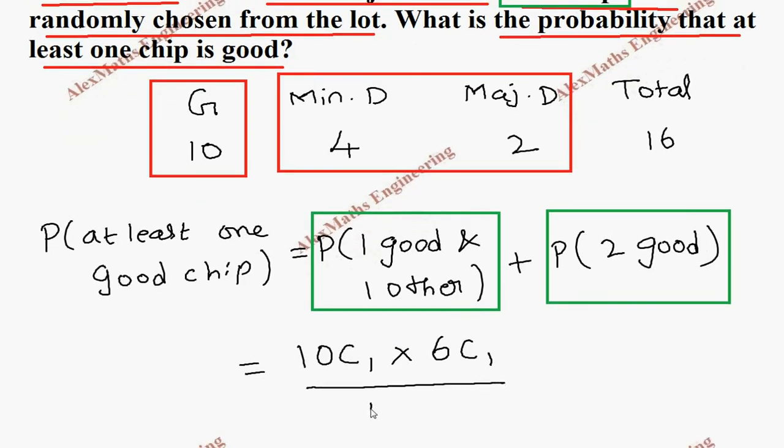In the same way, coming to the second case, 2 good will come from this 10 good, so 10C2 divided by the total. The total selection is 16C2.